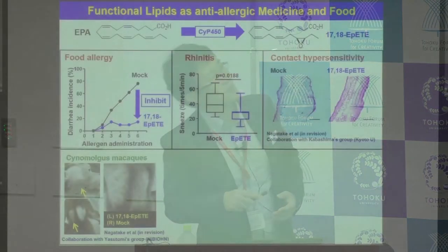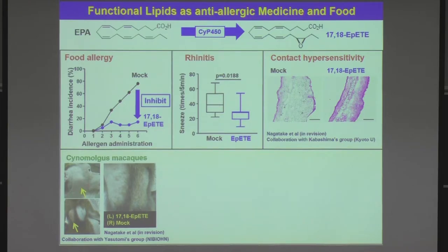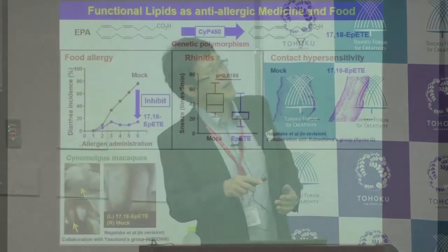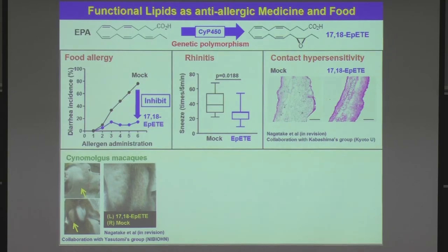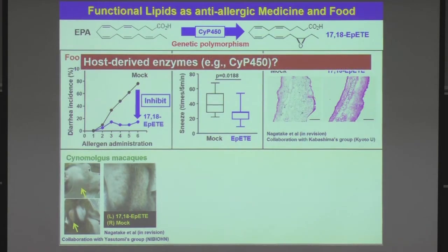Another interesting finding is that EPA is metabolized into EPETEs by the action of cytochrome P450, which is well known to have genetic polymorphisms. Based on these findings, we suppose that someone with very efficient enzymes can efficiently generate biologically active lipid metabolites when they take linseed oil or EPA. But if others do not have the good enzymes, they cannot produce this biologically active lipid metabolite, suggesting that host factors such as enzyme type may determine how dietary oils affect host immune systems.